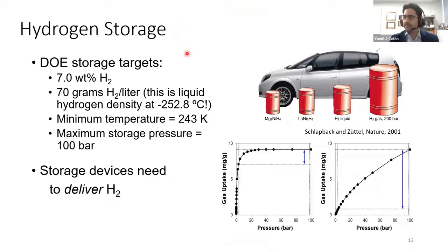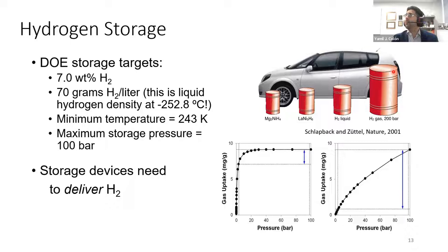One thing I focused on during my PhD was hydrogen storage. This picture exemplifies the problem: these are hydrogen tanks in different forms. This is the size of the fuel tank you would need to drive the same distance as a normal tank of gas in a midsize vehicle. Hydrogen gas at 200 bar — this is how big your fuel tank would have to be. Obviously, this isn't reasonable, so we need to find a way to densify it.